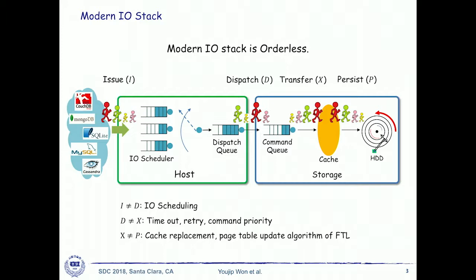When data blocks are transferred from the host to the storage device, they are first placed in the write-back cache and then flushed to the storage surface. As you can see, there are multiple layers: I/O scheduler, dispatch queue, command queue, and write-back cache. At each layer, the algorithm reorders, coalesces, and merges requests. So the order in which the application issues a request is entirely different from the order in which the associated data blocks reach the storage surface. That is why the modern I/O stack is called orderless.